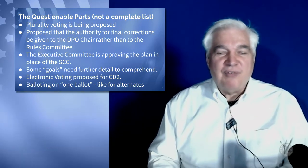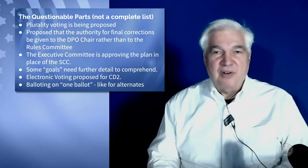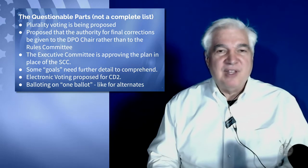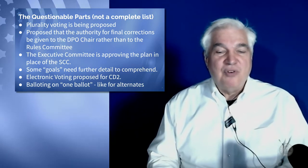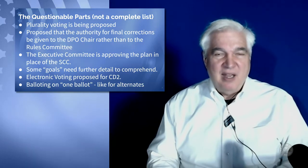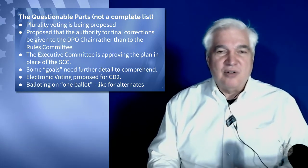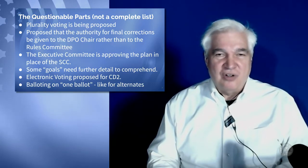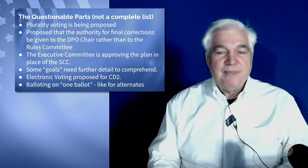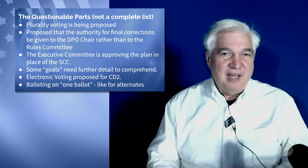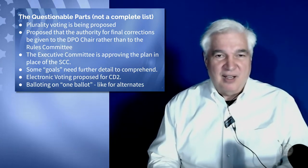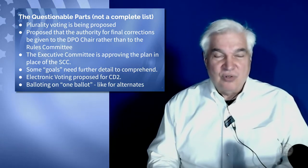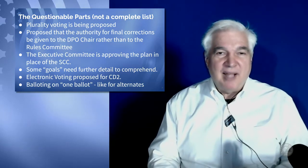They're proposing that the authority for final corrections be given to the DPO chair rather than the rules committee — we think that is a questionable decision. The executive committee is approving the plan in place of the state central committee. Some of the goals need further detail to comprehend. They've proposed electronic voting in CD2, which is truly not authorized in the bylaws. And unless we change the bylaws of the Democratic Party, this can't be done. If they are proposing that balloting be on one ballot, that's not going to work because balloting for alternates needs to be separate.